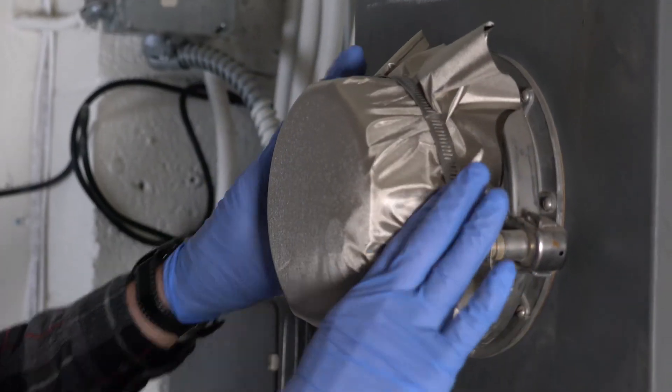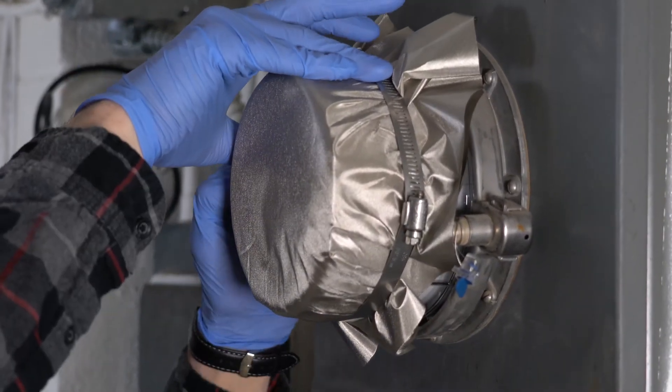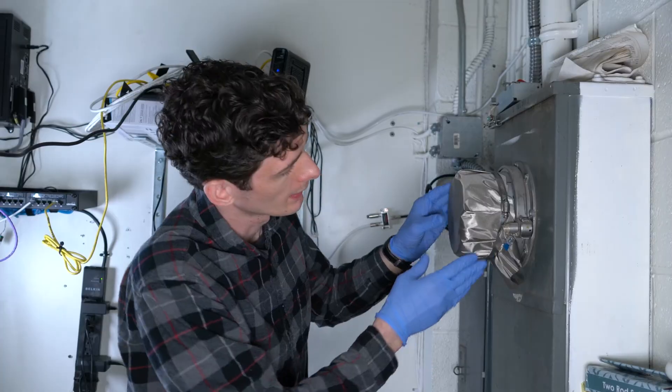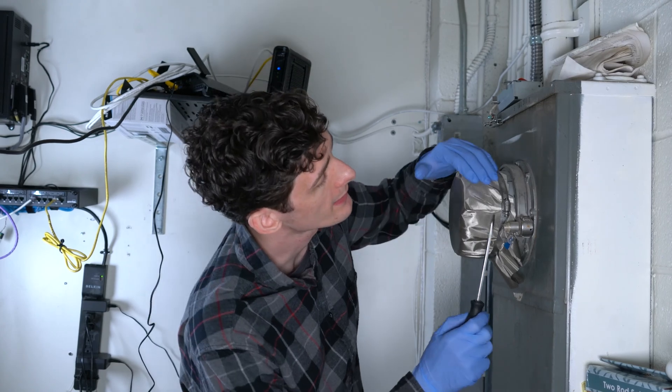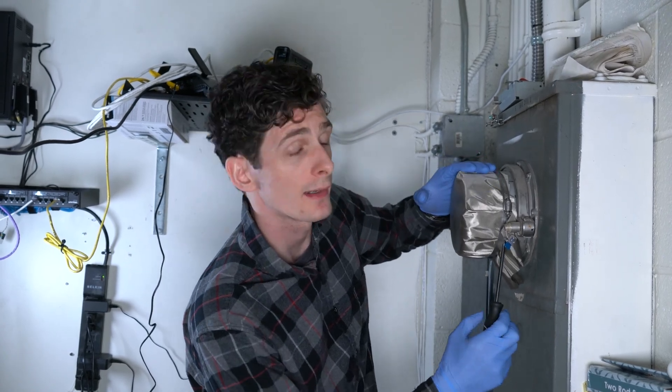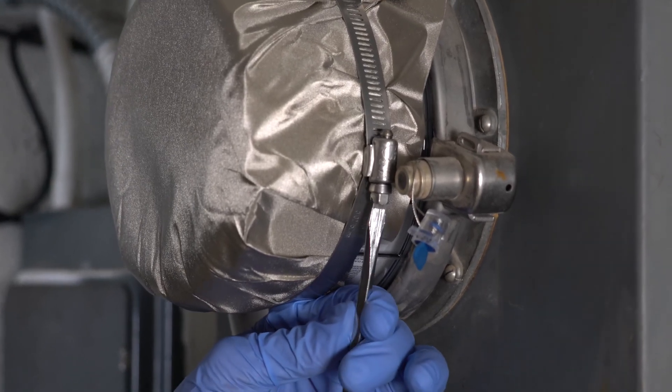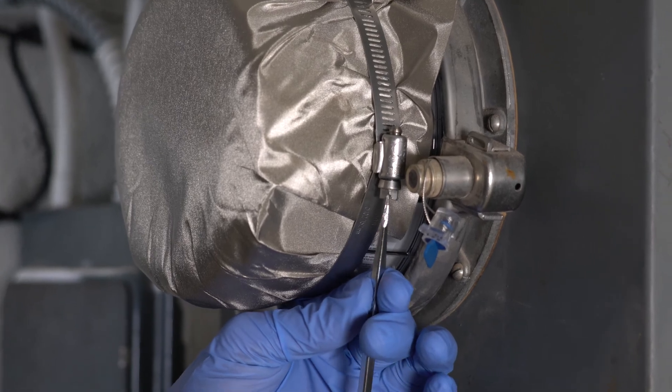So go ahead and push it down. You want to go all the way down to the back. And once we have that all the way back, we just want to take our screwdriver and tighten down our hose clamp. Now when you're tightening the hose clamp, you want to remember to not make it too tight because we don't want to break the enclosure.